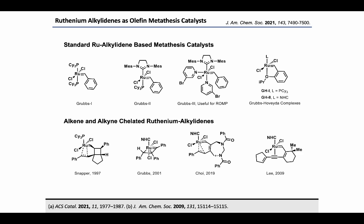On the other hand, alkene and alkyne-chelated ruthenium-alkylidenes are quite rare and sporadically reported in literature. The first report was by Snapper and co-workers, who isolated a trans-alkylidene-alkyne while studying ring-opening metathesis. In 2001, Grubbs and co-workers discovered the eta-3-vinylalkylidene complex. More recently, Chu and co-workers discovered a trans-1,5-alkylidene-alkyne while studying enyne metathesis reactions of diynes. Li and co-workers isolated a trans-alkylidene-alkyne while studying metathesis and metallotropy of triynes.